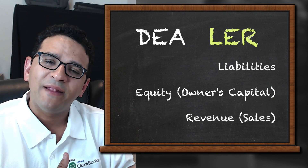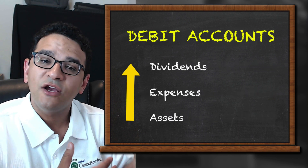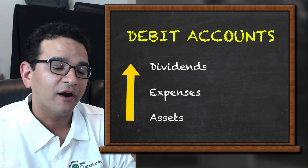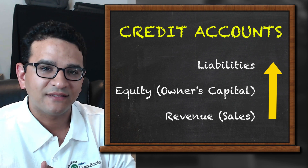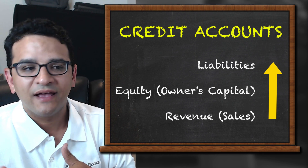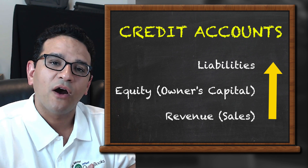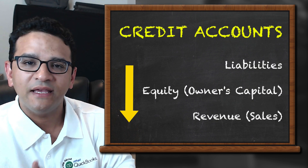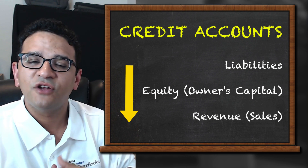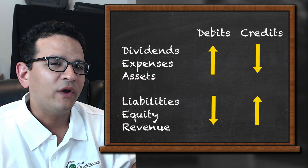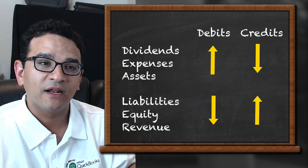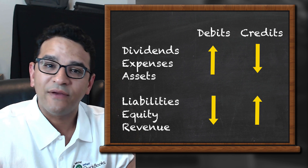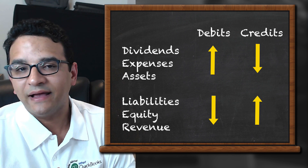If debit accounts are increased, they go on the left side. If credit accounts are increased, they go on the right side. Vice versa: if debit accounts are decreased, they go on the right side, and if credit accounts are decreased, they go on the left side. As long as you know that debit accounts are increased on the left side and credit accounts are increased on the right side, you'll have a solid foundation.